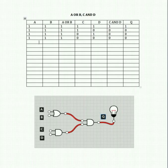Now let's work with different inputs — A ON, B OFF, C ON, D ON. A or B: with either input on, that still gives us 1. C and D are both ON, so that gives us 1. Our final output is 1 on that one.